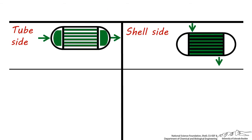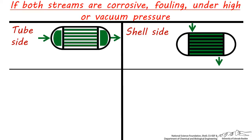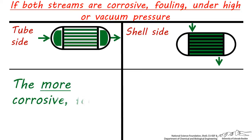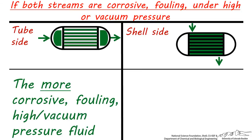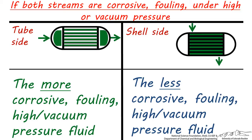There are some heat integration situations where one process stream is used to heat up or cool down another process stream. So if you encounter a situation where both streams are corrosive, fouling, or under higher vacuum pressure, try to determine which stream is most corrosive, fouling, or under extreme pressure conditions, and designate it as tube-side. The other, more moderate stream should be shell-side.